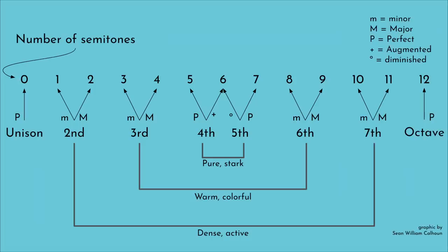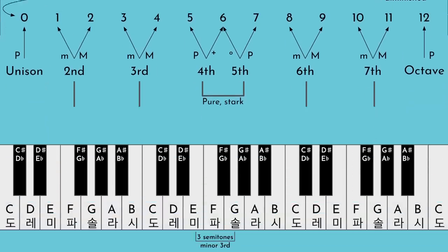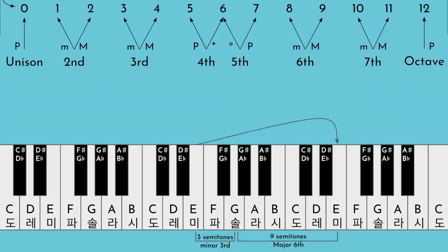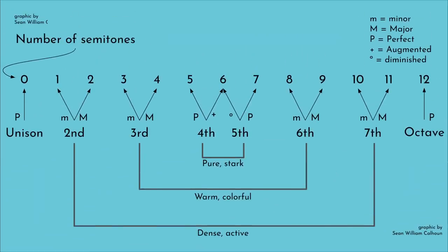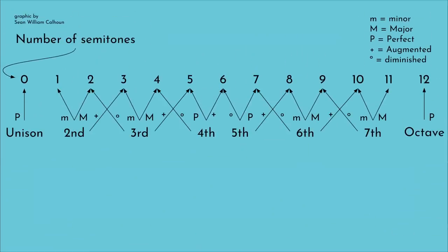This reversal makes sense. Imagine if you have a minor third — let's say E up to G. If you move the E up an octave, now you have a major sixth: nine semitones, but because it's another configuration of E and G, it sounds similar. There are other types of intervals, like augmented seconds and diminished fourths, but we're not going to deal with them in this video.